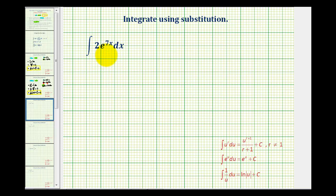We want to determine the anti-derivative using the substitution method. There's really not much of a choice here for u other than 7x. So let's set u equals 7x.